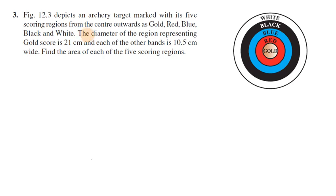The diameter of the gold region is 21 cm. Each other band is 10.5 cm wide. Find the area of each of the 5 scoring regions.